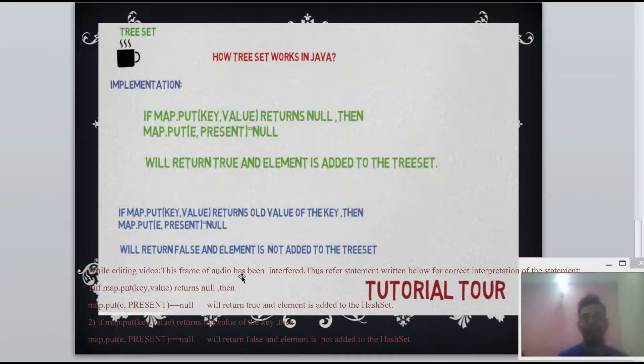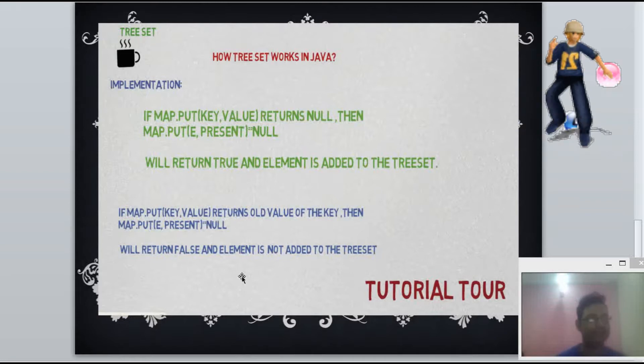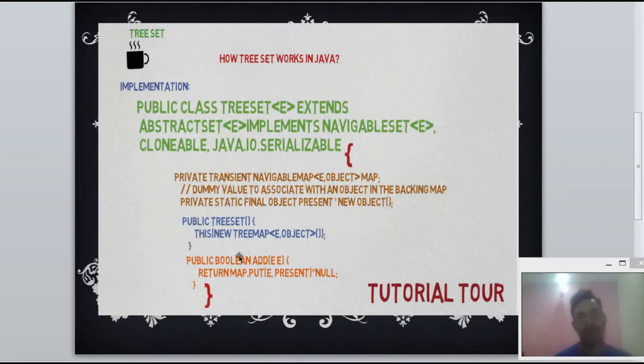In that case element will not be added to TreeSet, same as we have seen in HashSet. So hence whenever we are adding elements to the TreeSet object, it works just like HashSet. The only difference is that instead of HashMap, here we have TreeMap object. If you go back here, in case of HashSet we create object of HashMap, but in case of TreeSet we are creating internally object of TreeMap in the constructor.